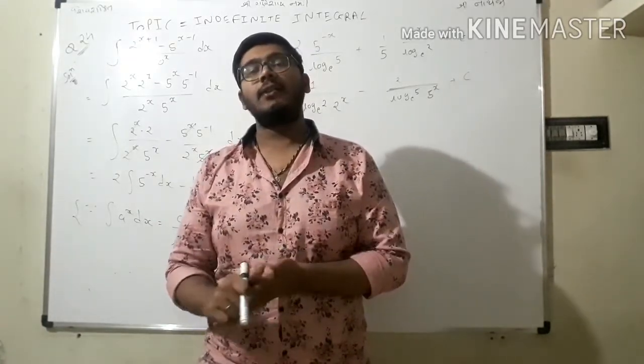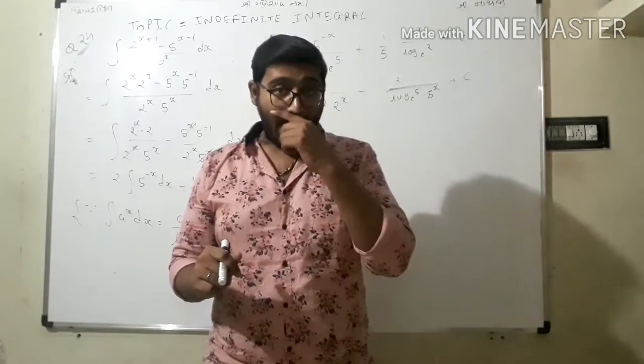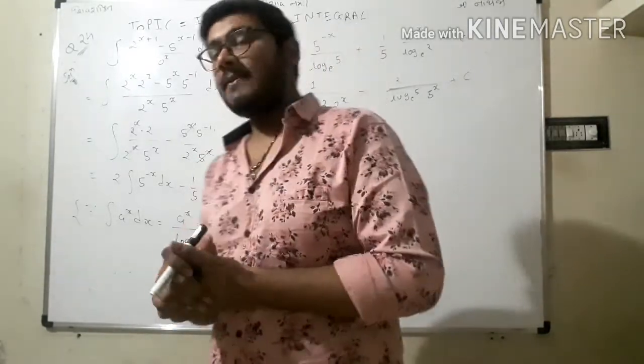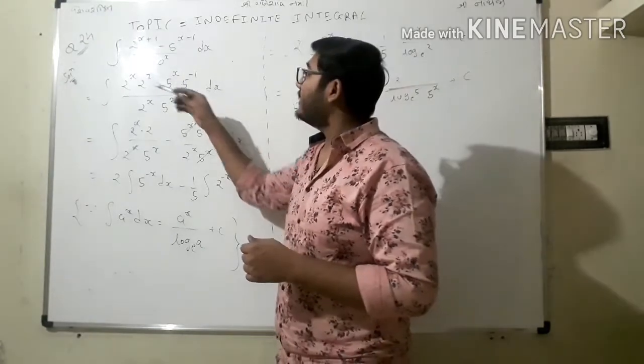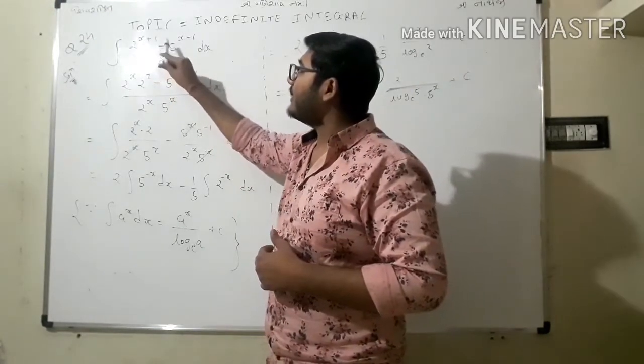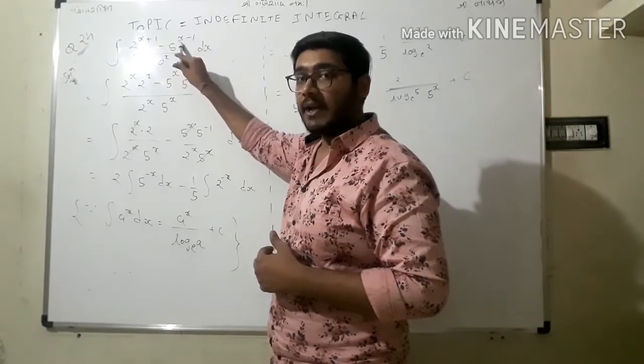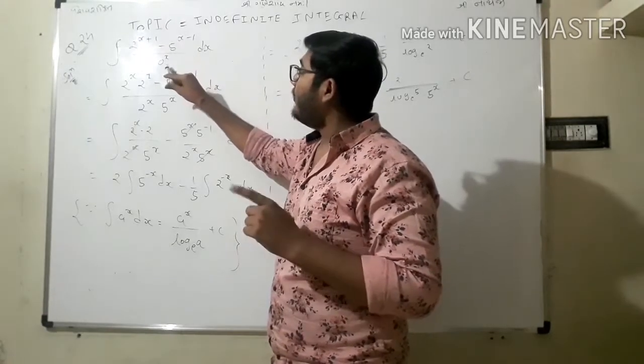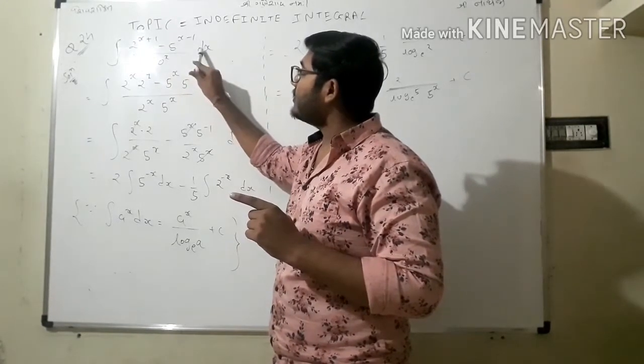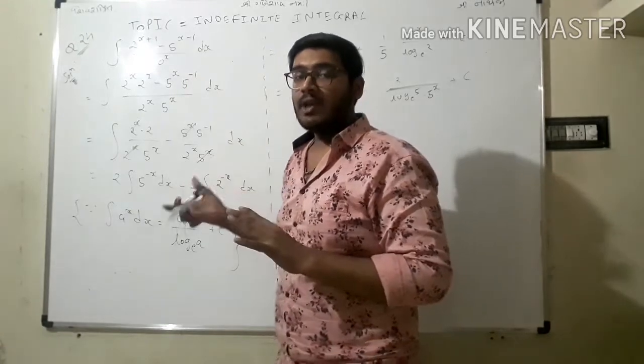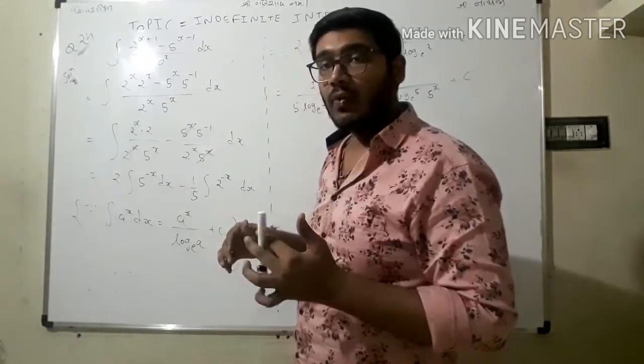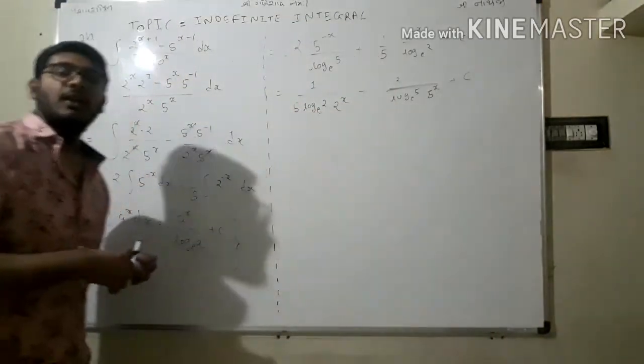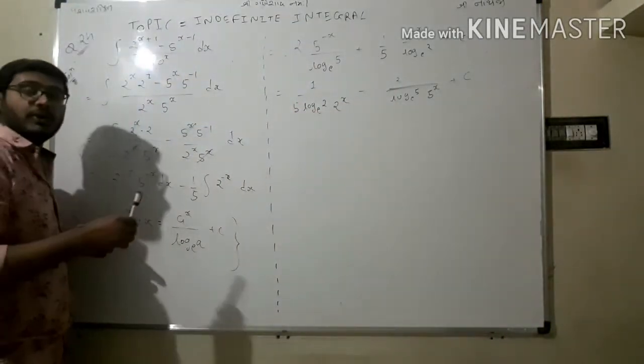And more and more share because who knows who needs to have, am I right? Okay, so the question is that integration 2 raised to x plus 1 minus 5 raised to x minus 1 upon 10 raised to x into dx. We need to find integration of that question.